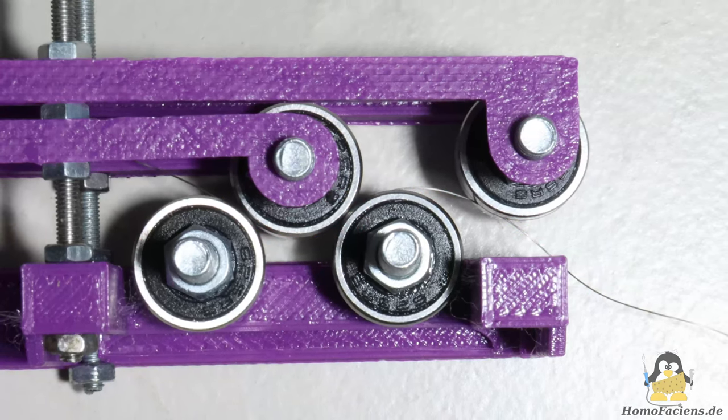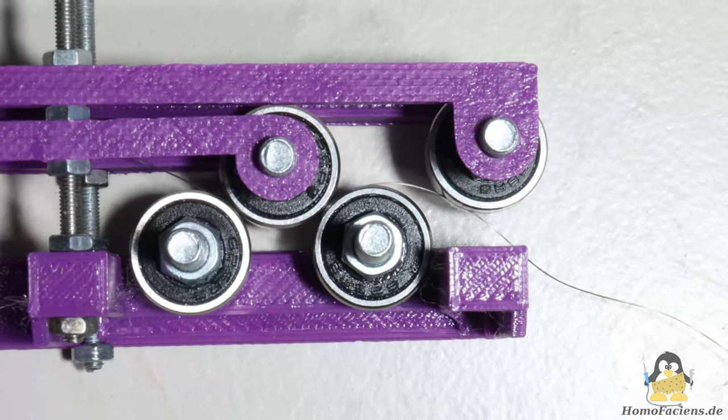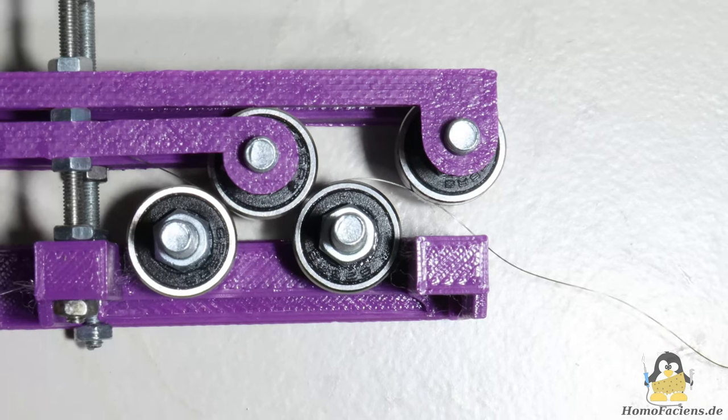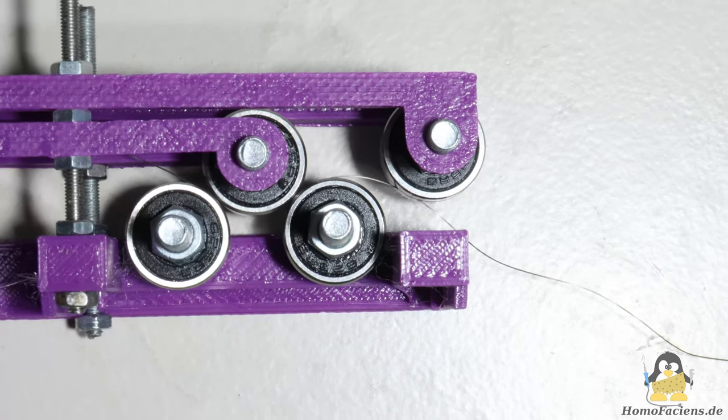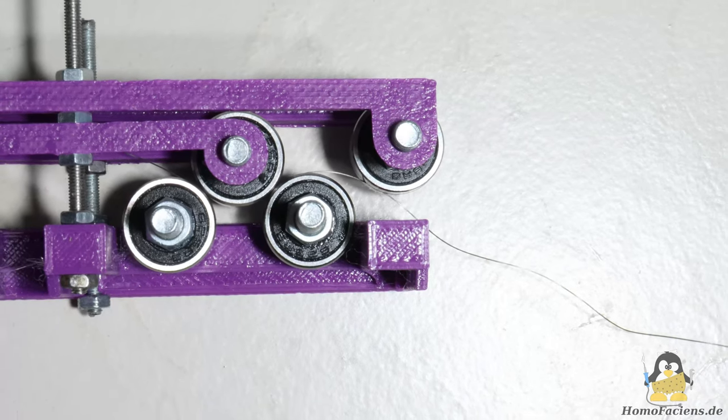My idea was to simply drive two of the rollers and thus combine wire feeding and wire straightening with the four rollers. But that didn't work because the 0.2mm tungsten wire came out of the mechanism in a corkscrew shape.